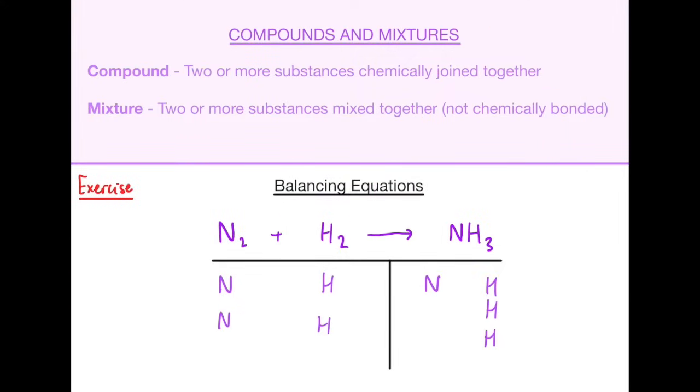Compounds and mixtures. Again, very important thing that you know the difference between. A compound is when two or more substances are chemically bonded together or chemically joined. A mixture is the same thing but they're not chemically joined. I like to think of something like squash, so when you have squash and water that's just a mixture because you're just pouring two things together. Whereas compound is something more like a water molecule where there is a physical bond between the hydrogen and the oxygen atoms.